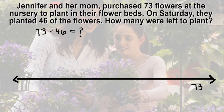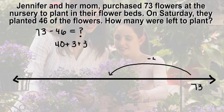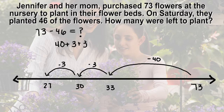There are a variety of ways to jump back or subtract 46 on the number line. Let's start by decomposing the 46 into 40 plus 3 plus 3. Take away or jump back the four tens first, followed by the ones. Jump back 40 to land at 33. Then jump back 3 to land at 30. And then jump back the last 3 to land at 27. The difference is 27.